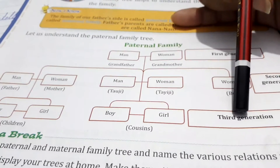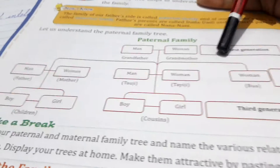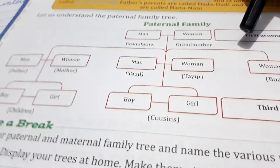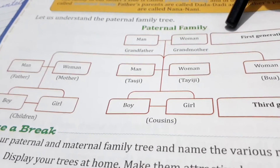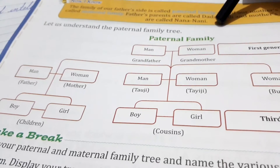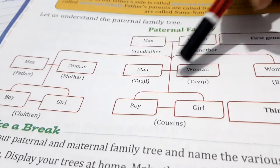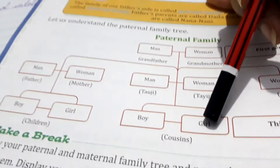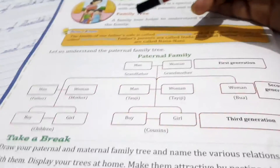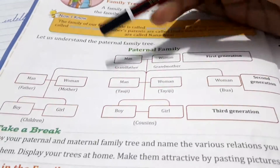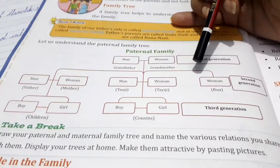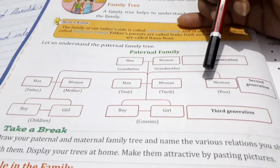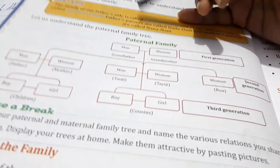This way, you are in the third generation. This is our main family tree. I will explain it properly. As a task, you can make it in your book and write it with names. Have a nice day.